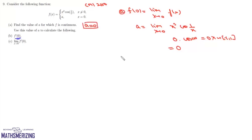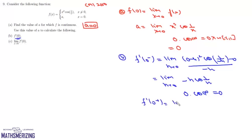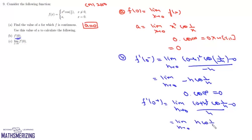For part b, we find f'(0). The left-hand derivative is limit h→0 of [(−h)²·cos(1/(−h)) − 0] / (−h) = limit h→0 of −h·cos(1/h) = 0·cos(∞) = 0. The right-hand derivative is limit h→0 of h²·cos(1/h) / h = limit h→0 of h·cos(1/h) = 0·cos(∞) = 0. So f is differentiable at x = 0 and f'(0) = 0.